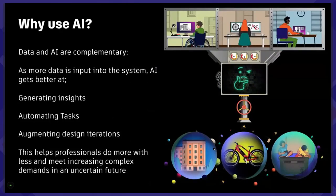Why use AI? Well, data and AI are complementary. As we get more data to work on, the AI gets better. It's going to help us generating insights, automating tasks, and augmenting design iterations - being able to run through all those iterations much faster to get to a better design answer.